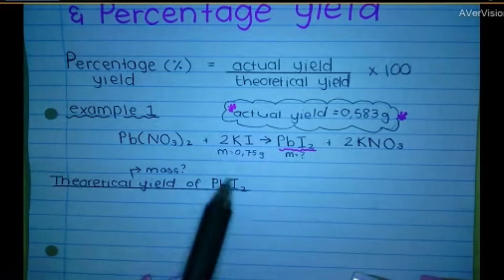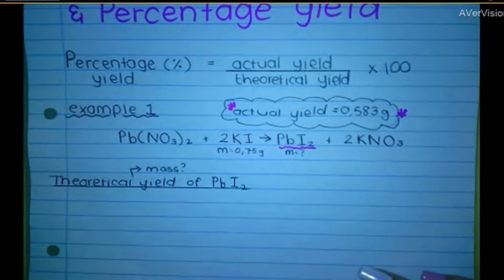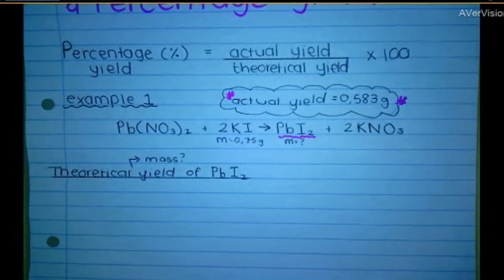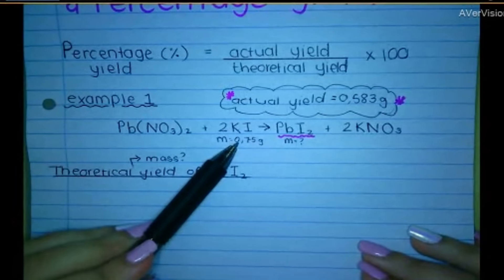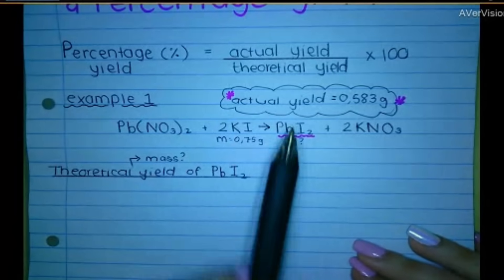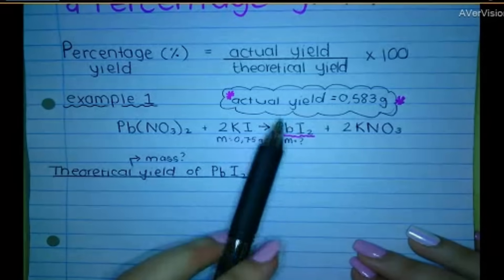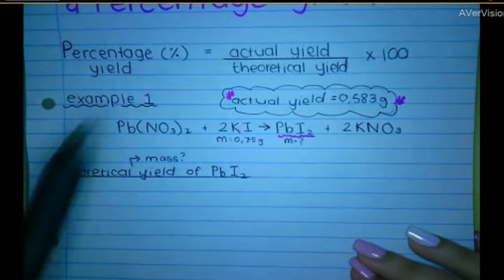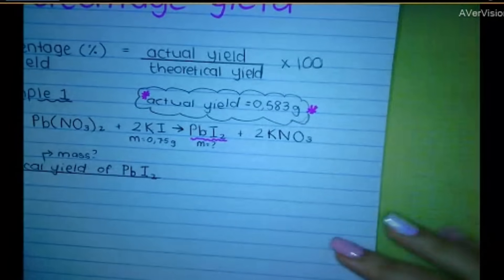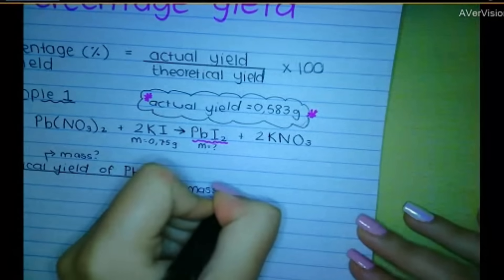How do I get from having the mass of this to getting the mass of this? Remember, all roads lead to mole. You need to convert this mass to moles. Then we use the mole ratio. Then we get the moles of this guy. And then when we have the moles, we can work backwards to get the mass. So basically, remember that little diagram I showed you. We go from mass to working out the moles.